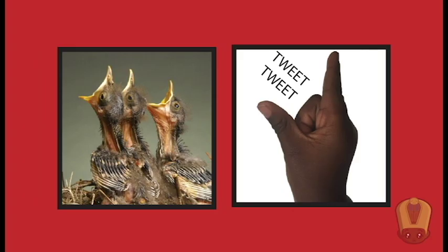The next verbal cue is baby bird. The child responds by saying tweet tweet while opening and closing their pointer finger and their thumb. Make sure all other fingers are tightly tucked away.